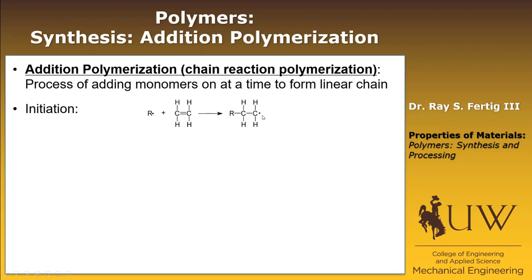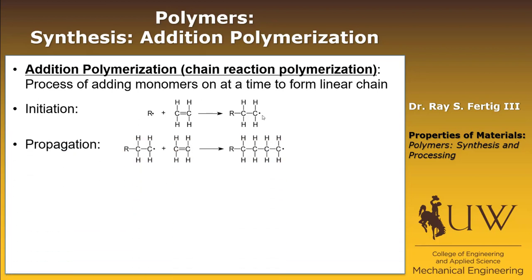That's the initiation phase. The propagation phase is where what's formed in the initiation phase actually goes out and does bond with more monomers, forming this chain. It's important to remember that addition polymerization is going to typically form linear chains. It's not what's going to be used for network polymers or heavily cross-linked polymers. So we end up with this chain formation, and you can imagine this goes on for many, many chains.